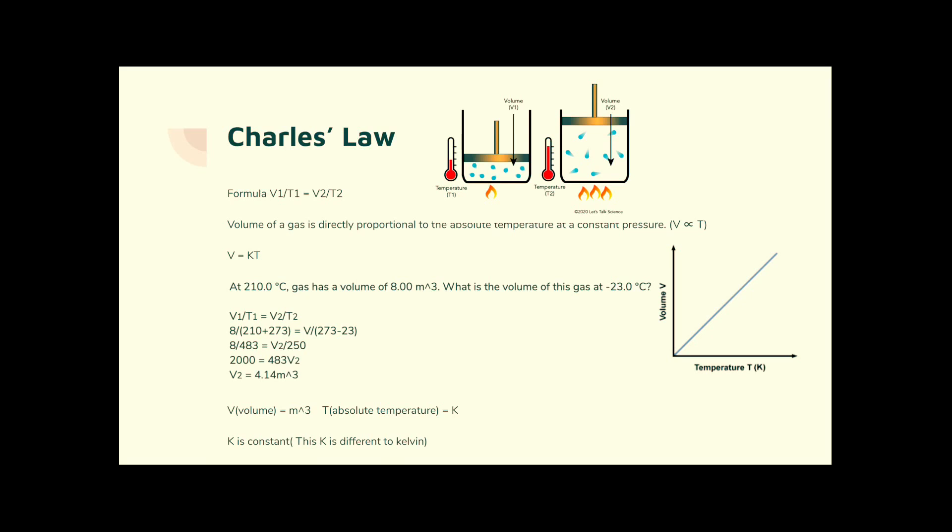So that's 8 over 483. V2 is what we're trying to find out, but it's negative degrees C. So we need to take that away from 273, which is 250. Substitute, solve, 4.14 metres cubed. Metres cubed in, 8 metres cubed in, 4.14 metres cubed out. What you put in, you get out. Temperature must be in Kelvin. Thank you, Charles.